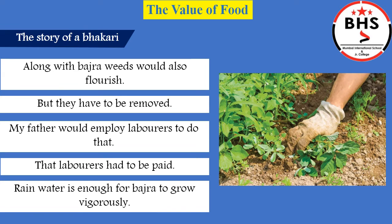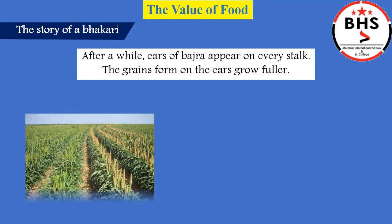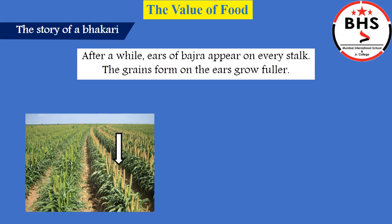Rainwater is enough for bajra to grow vigorously — meaning to grow tall very quickly. After a while, ears of bajra, as you can see, start to appear on every stalk. The grains form on the ears, grow fuller, and cover the full ear of the crop.